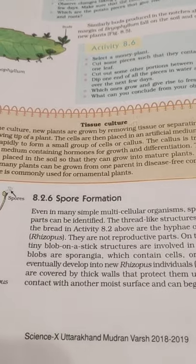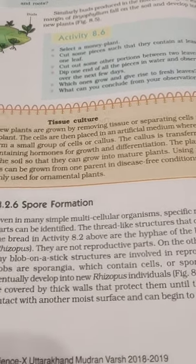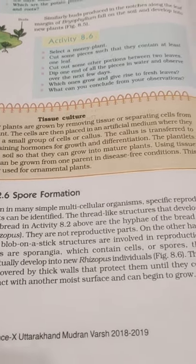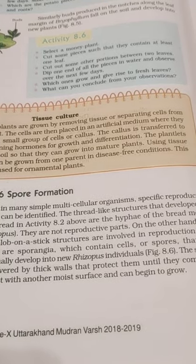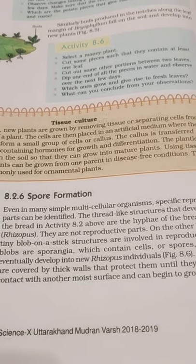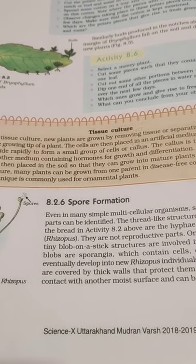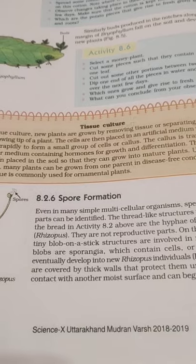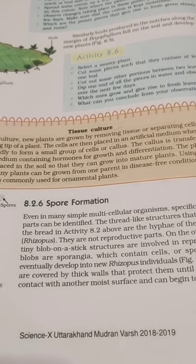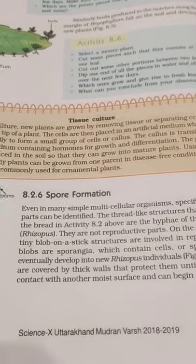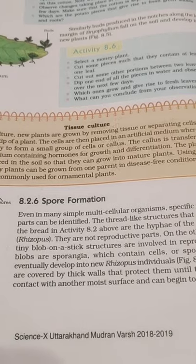Tissue culture is also called micro-propagation and is very common in horticulture for producing ornamental plants. Advantages include: it is a very fast technique; we can get thousands of plantlets from a single plant in about a week's time. Normally, obtaining new plants requires waiting for flowering, seed development, sowing, and then growth — taking a year or more. With tissue culture, we get a thousand plants from one single plant in a week.